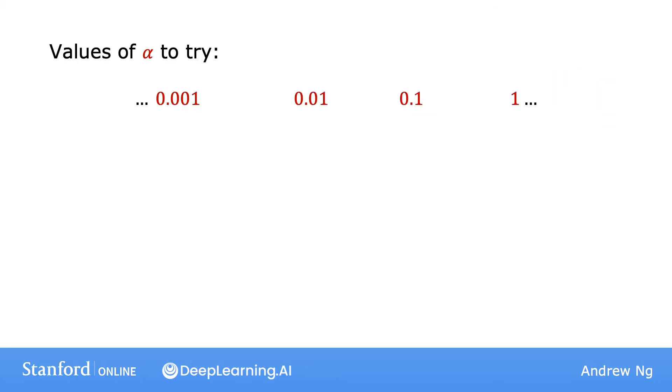When I am running gradient descent, I will usually try a range of values for the learning rate alpha. I might start by trying a learning rate of 0.001, and I might also try a learning rate that's 10 times as large, say 0.01 and 0.1, and so on. For each choice of alpha, you might run gradient descent just for a handful of iterations and plot the cost function j as a function of the number of iterations. After trying a few different values, you might then pick the value of alpha that seems to decrease the learning rate rapidly but also consistently.